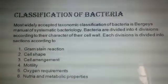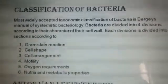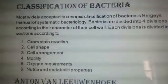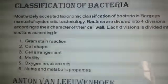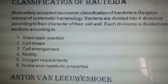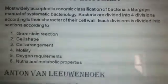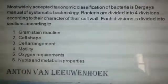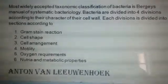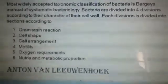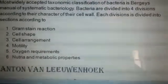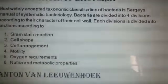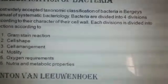Now let's go on to the classification of bacteria. The most widely accepted taxonomic classification is Bergey's Manual of Systematic Bacteriology. Bacteria are divided into four divisions according to the character of the cell wall. They are further classified based on gram stain reaction, cell shape, cell arrangement, motility, oxygen requirements, and metabolic properties.